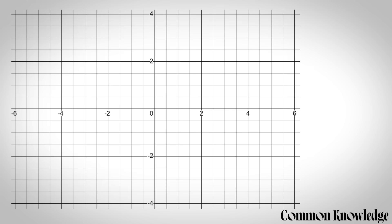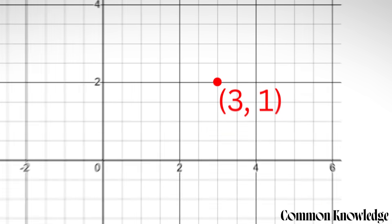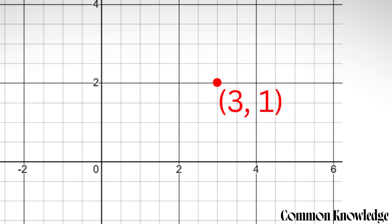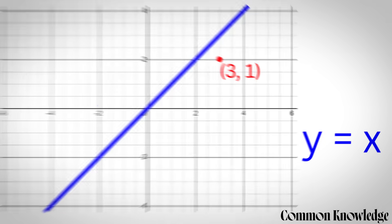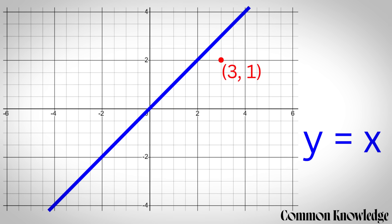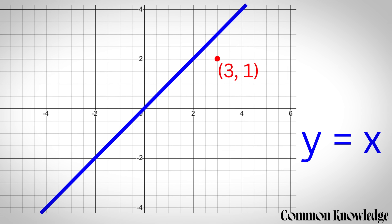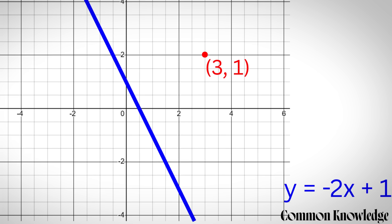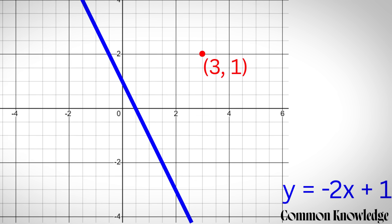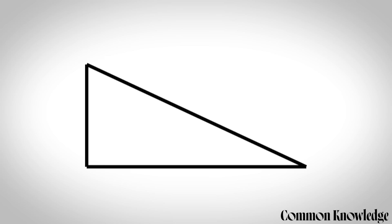Graphing: if you've got an x-axis and a y-axis then you can find a point using coordinates. But if you need to find a line then you can use an equation like y equals x. If you plot all the points where the x coordinate equals the y coordinate then you get the diagonal line y equals x. You can also plot other lines like y equals minus 2x plus 1, or y equals x squared.